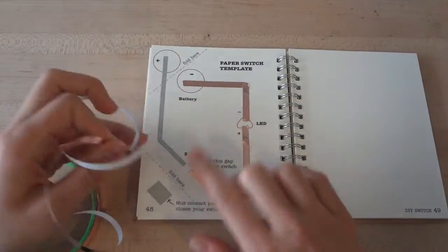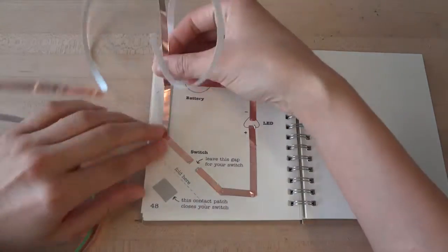You'll notice now there are two gaps in this circuit. One is for your LED, and the other gap is for your switch.